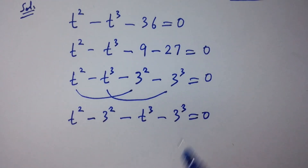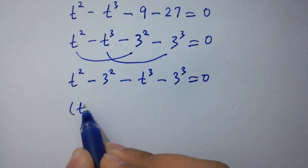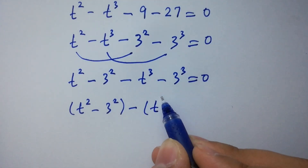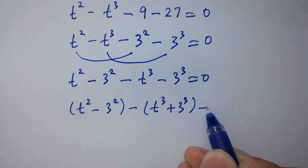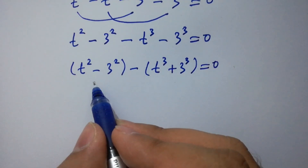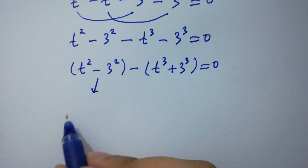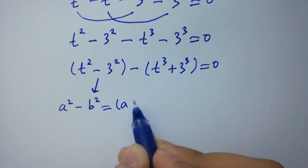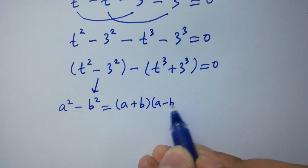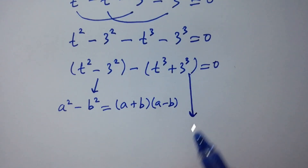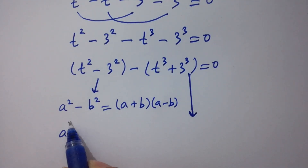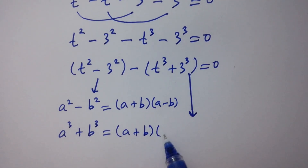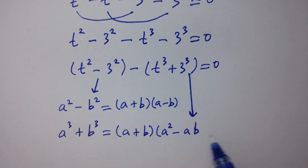Bracket: t-squared minus 3-squared, minus common t-cubed plus 3-cubed, equal to 0. We know the formula a-squared minus b-squared equals (a+b)(a-b), and the formula a-cubed plus b-cubed equals (a+b)(a-squared minus ab plus b-squared).